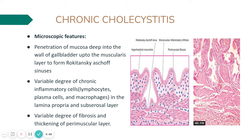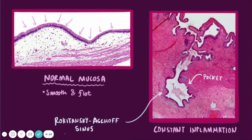Chronic cholecystitis microscopic features: since this is a chronic inflammation, the major cells present are macrophages and lymphocytes. There is penetration of the mucosa deep into the wall of the gallbladder up to the muscularis layer to form Rokitansky-Aschoff sinuses. There is also a variable degree of chronic inflammatory cells — lymphocytes, plasma cells, and macrophages — and variable degree of fibrosis and thickening of the perimuscular layer.